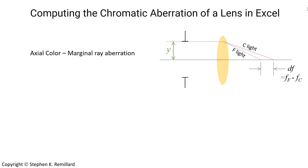There are two kinds of chromatic aberrations. Axial color is a marginal ray aberration — the marginal ray being clearly defined perhaps by a stop in front. If there's no stop in front, it's defined by the edge of the lens. Because of the dispersion of the glass, different wavelengths of light have different marginal focal points. And that's the chromatic aberration we're going to look at today.